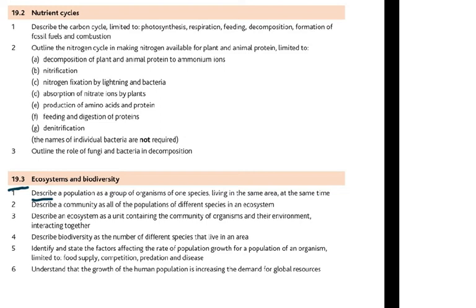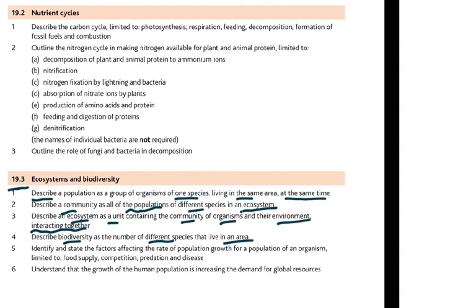Now we will discuss 19.3 — ecosystems and biodiversity. A population is a group of organisms of one species living in the same area at the same time, like the population of Pakistan — all the human beings, young and old, who live in Pakistan in 2022. A community is all the populations of different species in an ecosystem. The factors affecting the rate of population growth are limited to: food supply, competition, predation, and disease — four things.